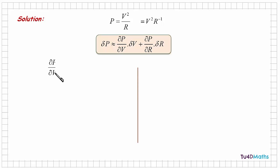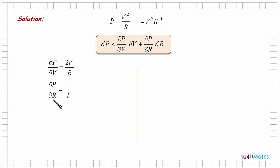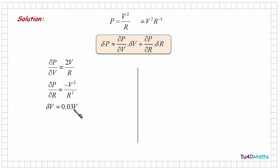So differentiating the power with respect to the voltage, keeping the resistance constant, gives 2v over r. Now we are told that the small change in the voltage is an increase of 3%, which is 0.03 times v.